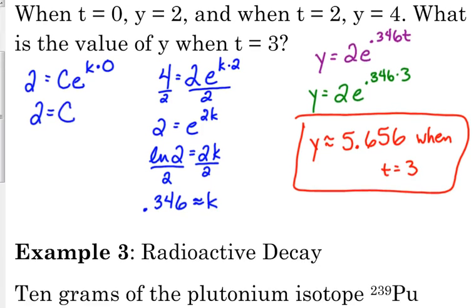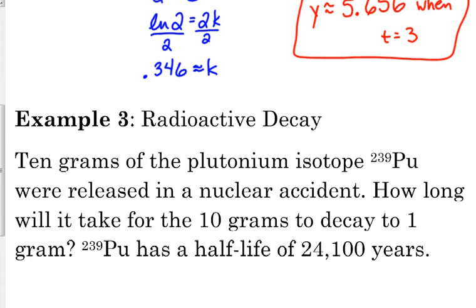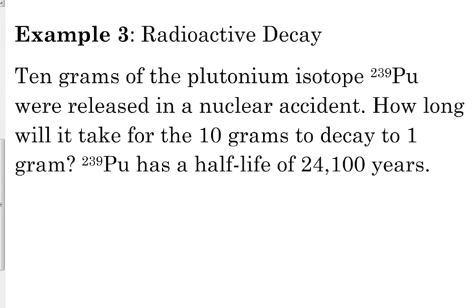So let's look at an actual application problem. Radioactive decay. Now we did these in pre-calc with half-lifes. So that is one way to look at this problem, but we're going to look at it in a slightly different perspective here. 10 grams of the plutonium isotope 239 were released in nuclear accidents. How long will it take for the 10 grams to decay to 1 gram? And they tell us the half-life of this plutonium. So radioactive decay follows the same growth and decay model. So we're still looking at our general equation, y equals c e to the kt. So let's look at what we know. We start with 10 grams. c is always our initial value. So we can plug that in.